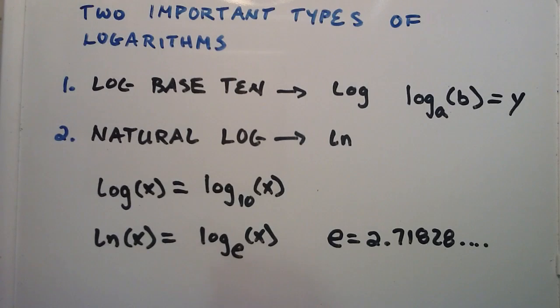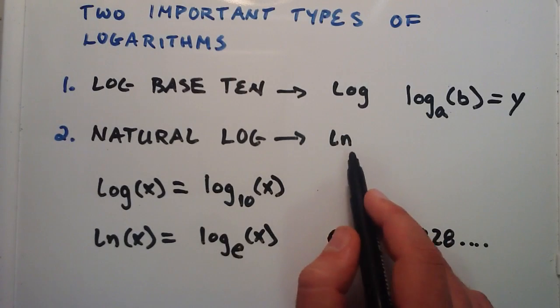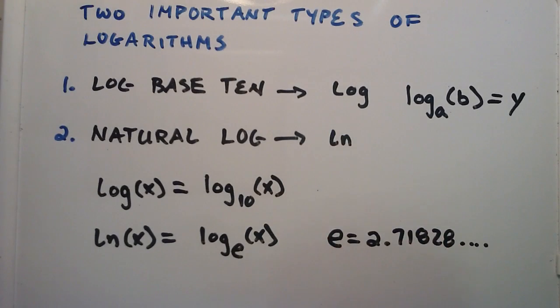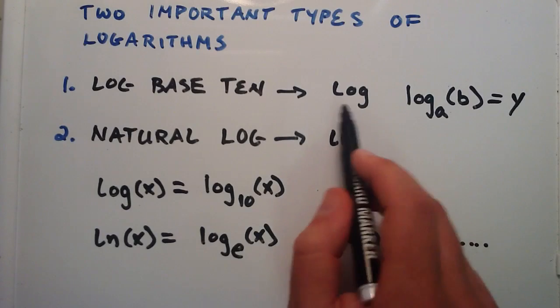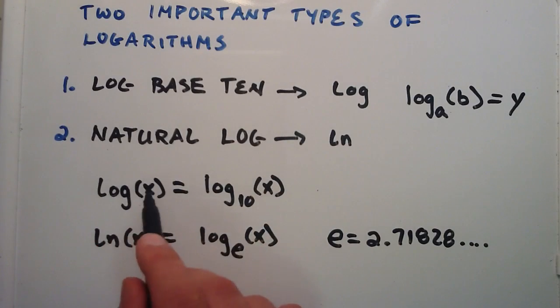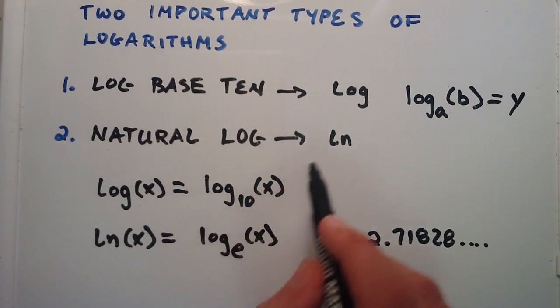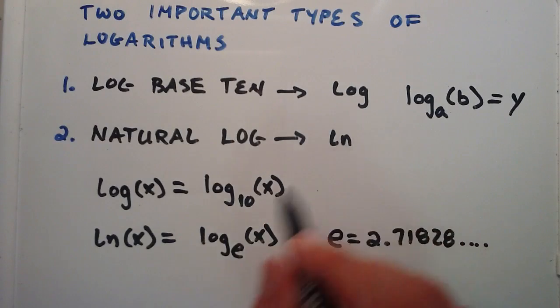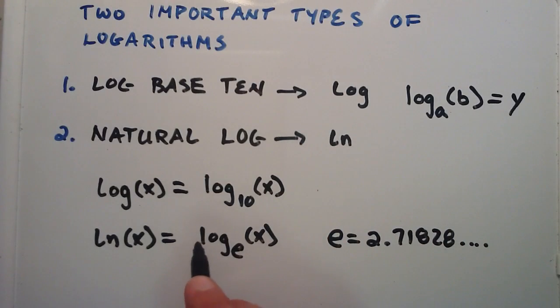So when you see buttons like log and ln on your calculator, I want you guys to understand that log implies that you're working with a logarithm of base 10, and that ln, or the natural log, implies that you're working with a logarithm of base e.